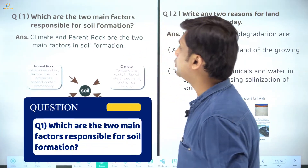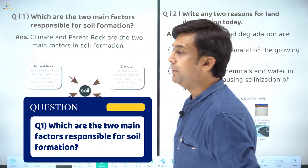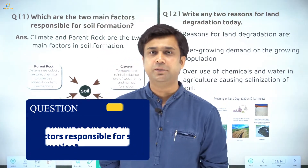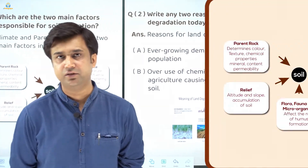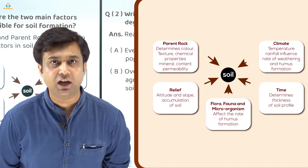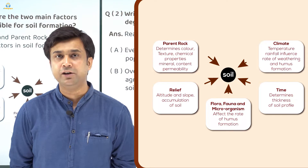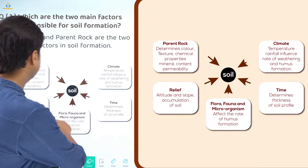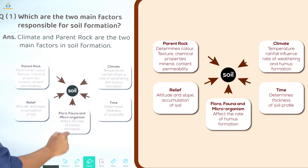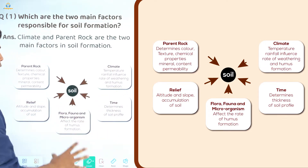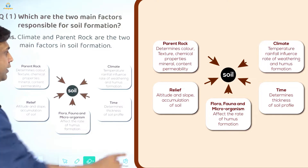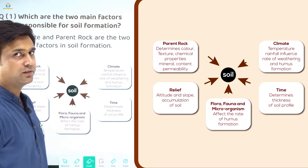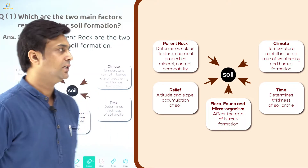Our first question is: which are the two major factors responsible for soil formation? When we studied soil formation, we saw that factors like parent rock, climate, altitude/relief, humus, flora, and fauna are all responsible. But the two most important factors are climate and parent rock — these are the basis on which soil formation takes place.